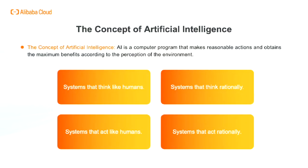The concept of artificial intelligence is that AI is a computer program that makes reasonable actions and obtains the maximum benefits according to the perception of the environment. In the figure, you see the definitions of AI laid out along two dimensions. The dimensions on top are concerned with thought processes and reasoning, whereas the ones on the bottom address behavior. The definitions on the left measure success in terms of fidelity to human performance, whereas the ones on the right measure against an ideal performance measure called rationality. A system is rational if it does the right thing, given what it knows.